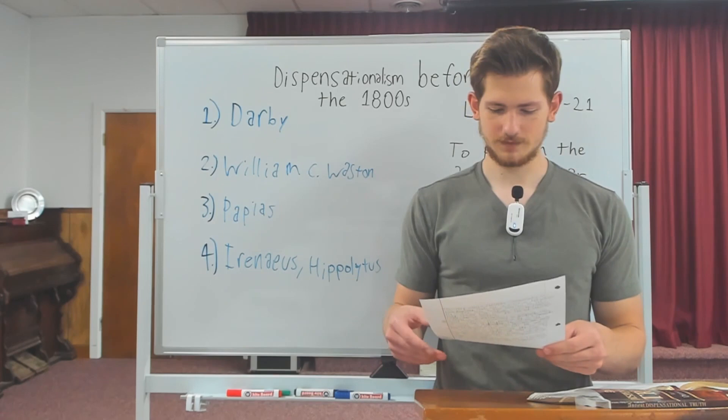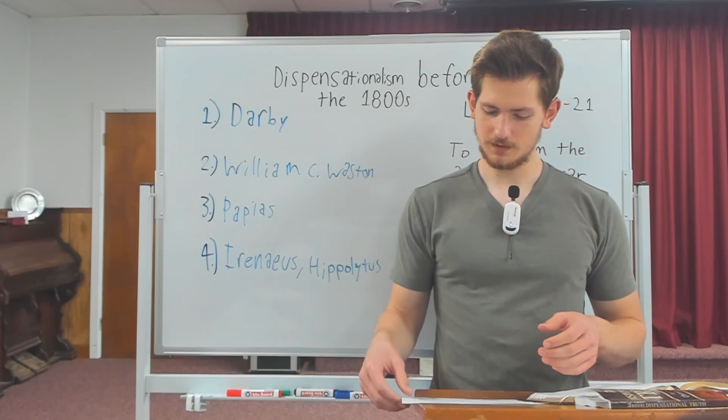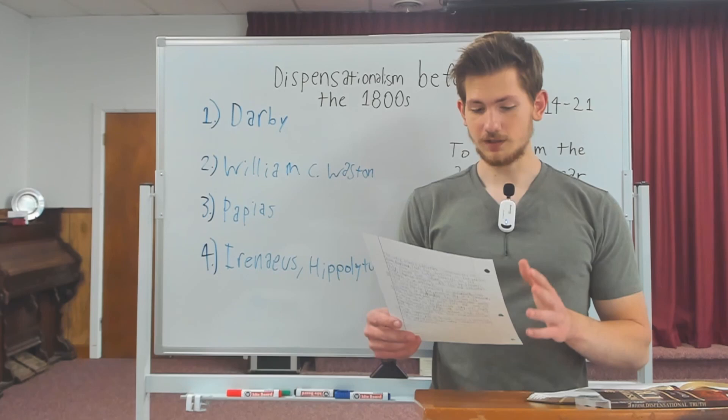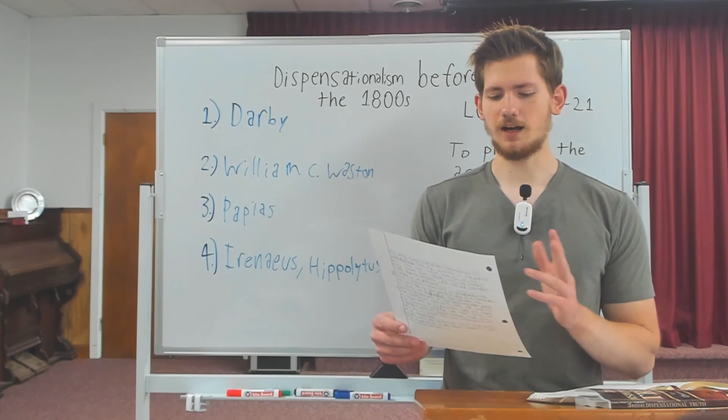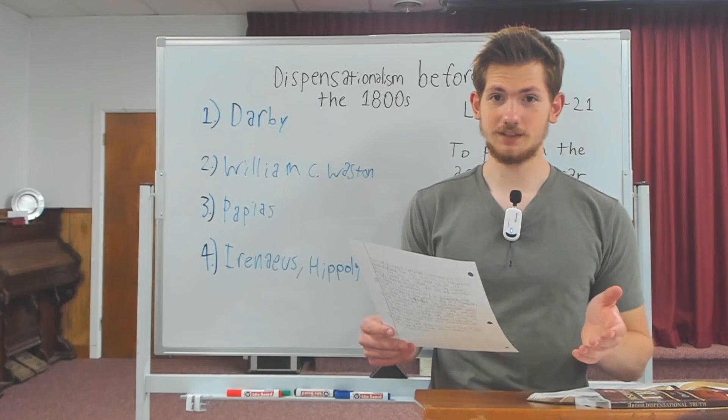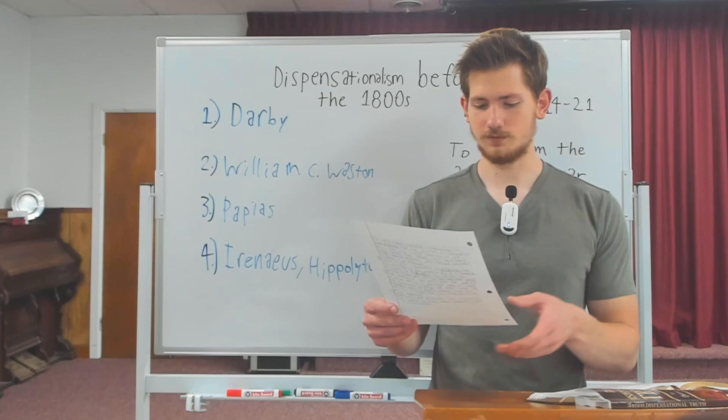For the first time in history, the Bible was available in common language at a low price, so people could afford it. This was very important because within about 30 years — in the 1640s — commentaries began to appear based on scripture rather than the scholars' teachings. So ordinary people who weren't scholars were offering their own interpretations of scripture.